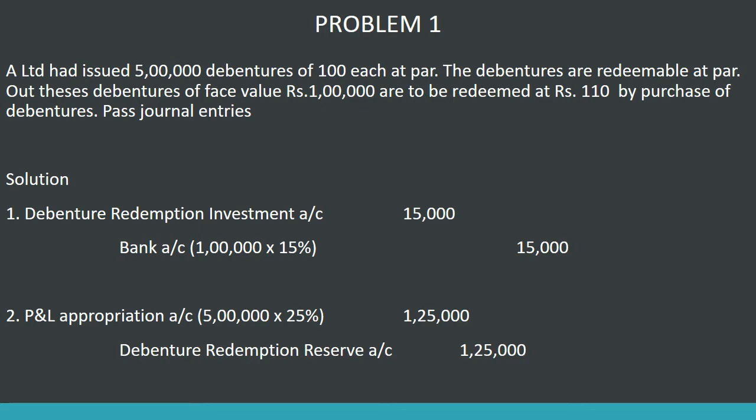We transfer the debenture redemption account to the debenture redemption account. The journal entry: debenture redemption investment account debtor to bank. The first debenture is Rs. 5 lakhs, the second debenture is Rs. 1 lakh — Rs. 25,000. And the payback Rs. 25,000. We transfer the DRR account.